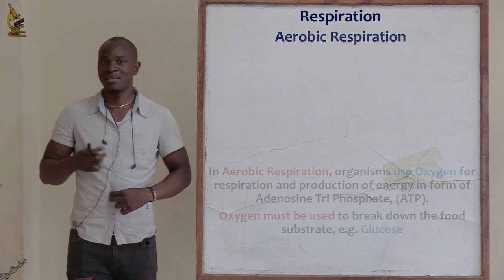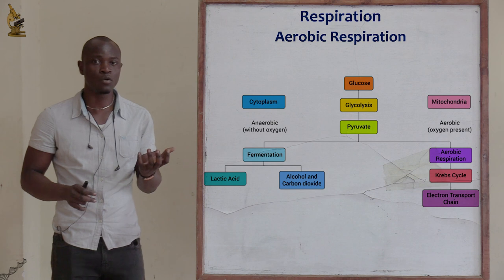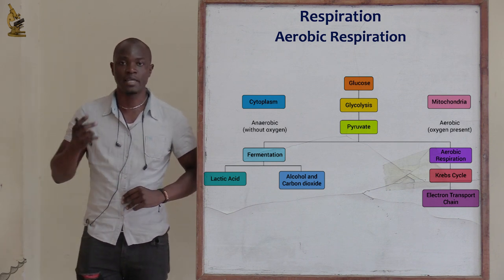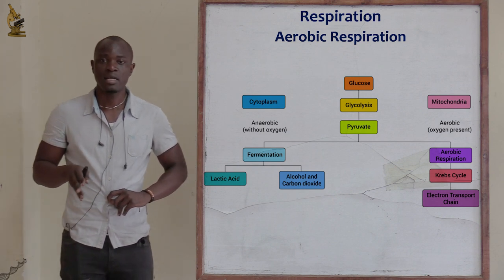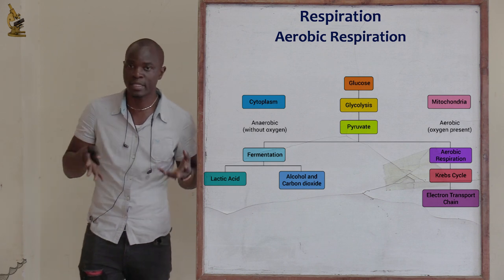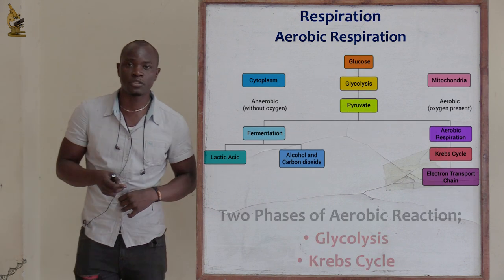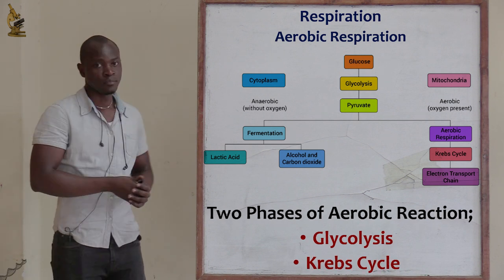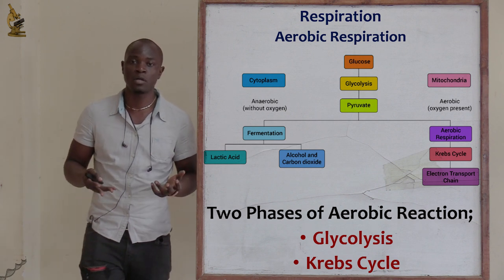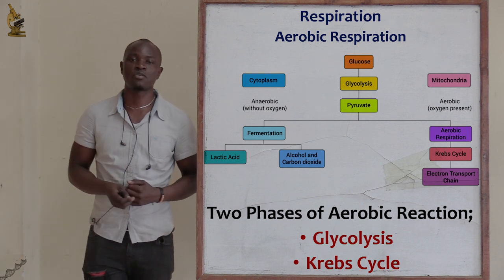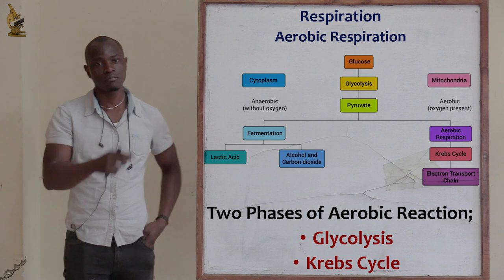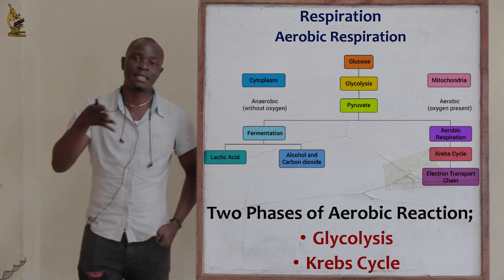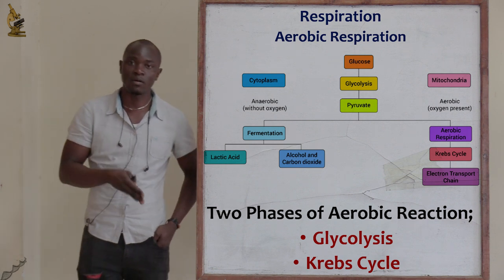This process of respiration occurs in a series of chemical reactions in the presence of different respiratory enzymes. Respiration is the process whereby food is chemically broken down in order to release energy. There are mainly two phases of aerobic respiration: the first phase is glycolysis, and glycolysis is immediately followed by the Krebs cycle. If oxygen is made available, we undertake the Krebs cycle.